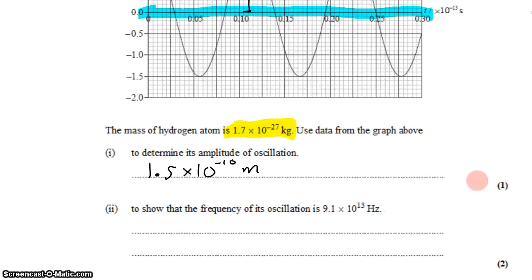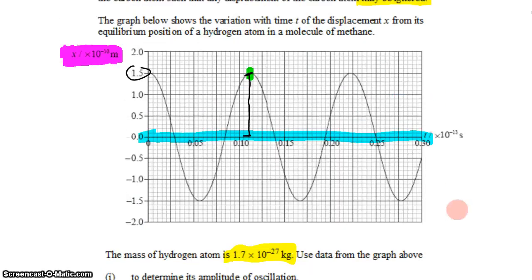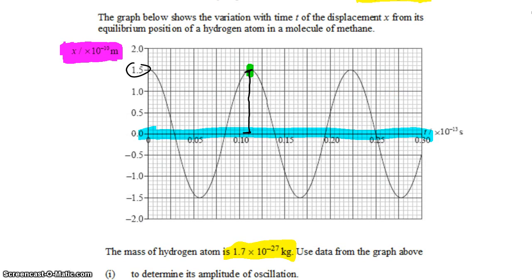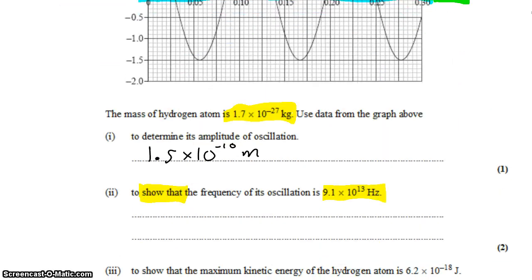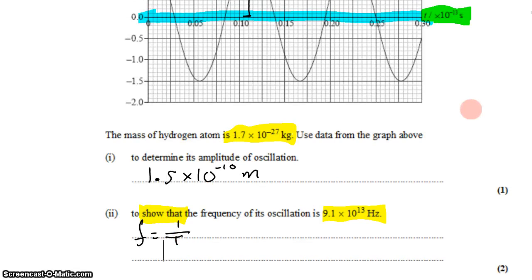Next, we want to show that the frequency of the oscillation is 9.1 × 10¹³ hertz. This is a 'show that' question — every time we're given the answer we're meant to show, we have to arrive at it, and it must be the very last thing we write. We think about how to get frequency from the information given. We have a time domain, so we can use the fact that frequency equals 1 divided by the period. We just need to figure out the period of motion.